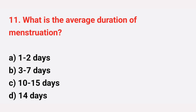Question number 11: What is the average duration of menstruation? The right answer is option B, 3 up to 7 days.